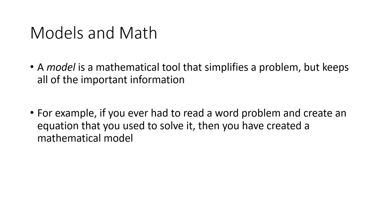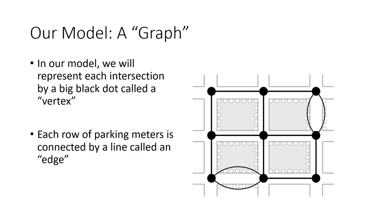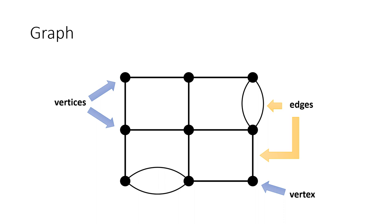A model is a mathematical tool that simplifies a problem but keeps all of the necessary and important information. For example, turning a word problem into an algebraic equation is a model. The kind of model we're going to use is called a graph. I've overlaid it over the neighborhood map. The big black dots are each called a vertex — multiple vertices — and each row of parking meters is used as a connection between the dots, called an edge. Each dot is a vertex, and the connections between the dots are called edges.